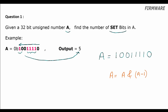We have A equal to 10011110. After the first operation, A becomes 10011100. After the second, A becomes 10011000. Third time, A equal to 10010000. Fourth time, A equal to 10000000. And in the fifth time, we have A equal to 0.